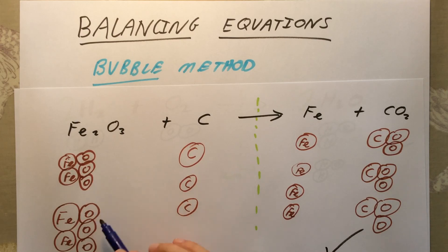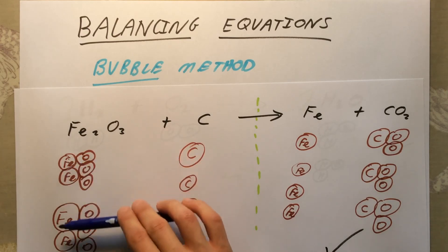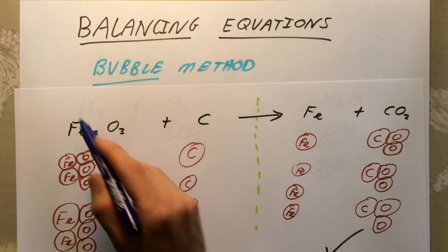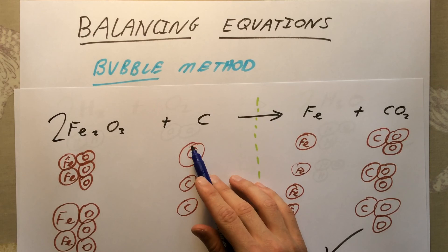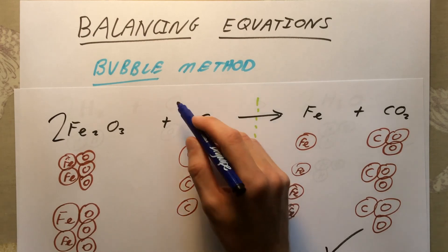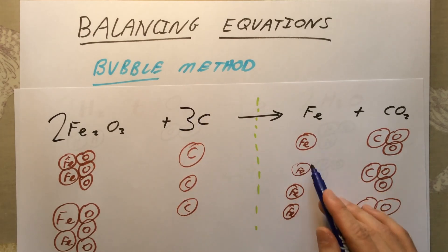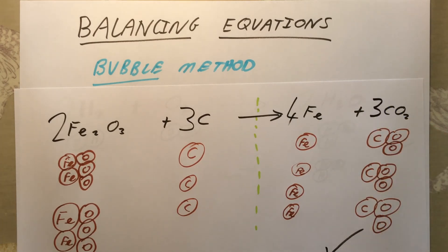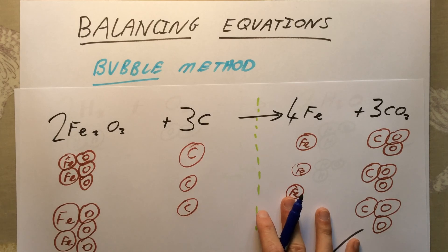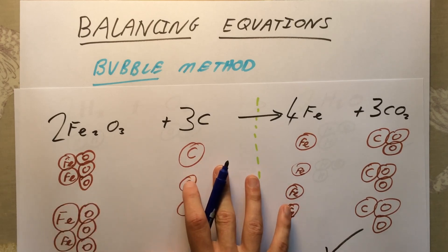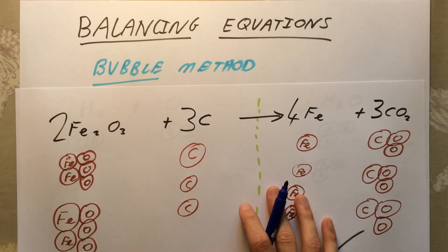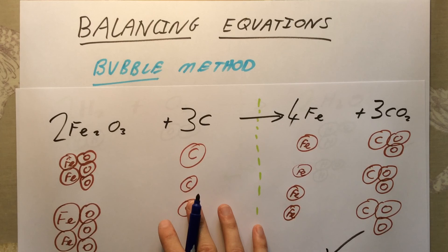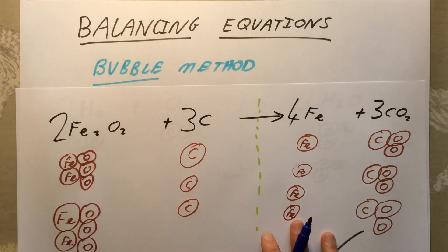To finish, I just count up the molecules. There are two lots of Fe₂O₃, so a big 2 in front. Three lots of carbon, so a big 3 in front. Four lots of iron, so a big 4 in front. And three lots of CO₂, so a big 3 in front. That's a slightly trickier example. Get yourself on Google, look up some of these, and give them a go. Hopefully the bubble method will make it much easier for you to balance equations successfully.